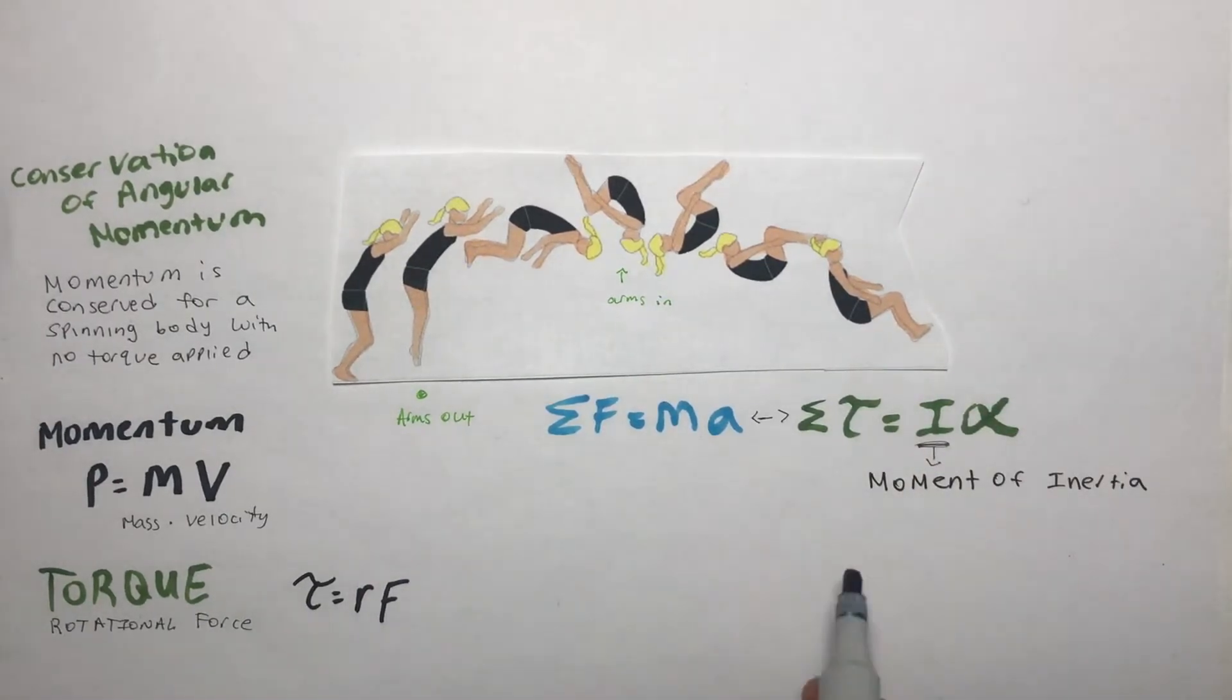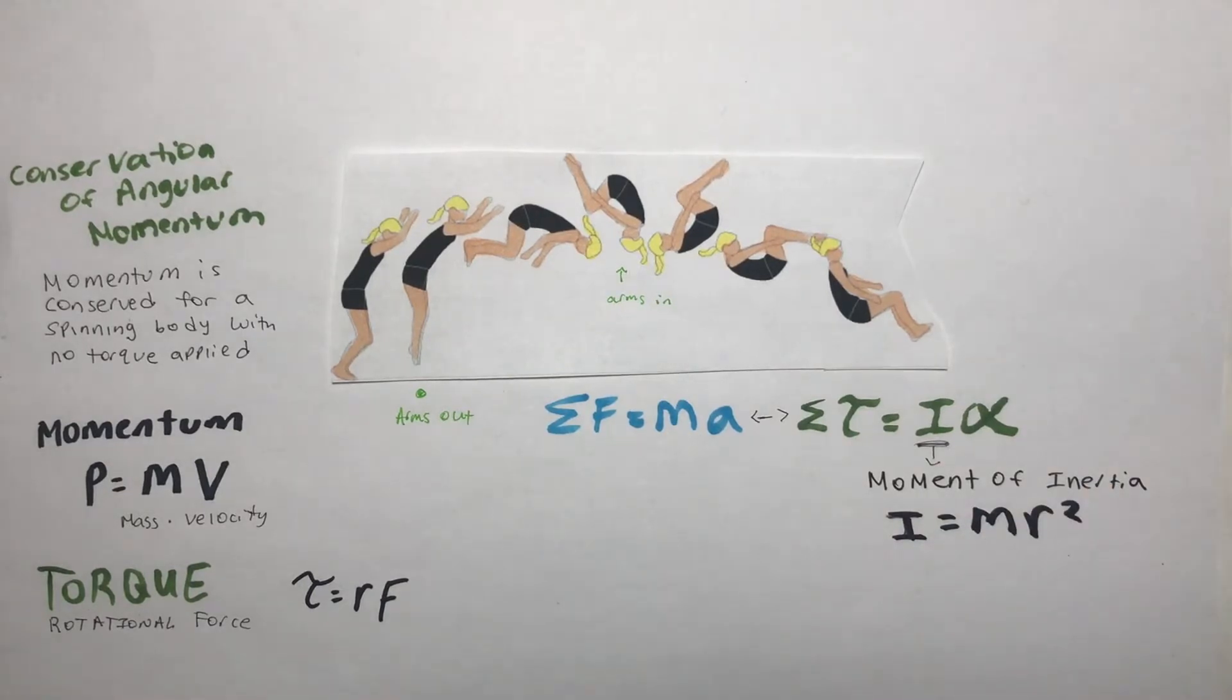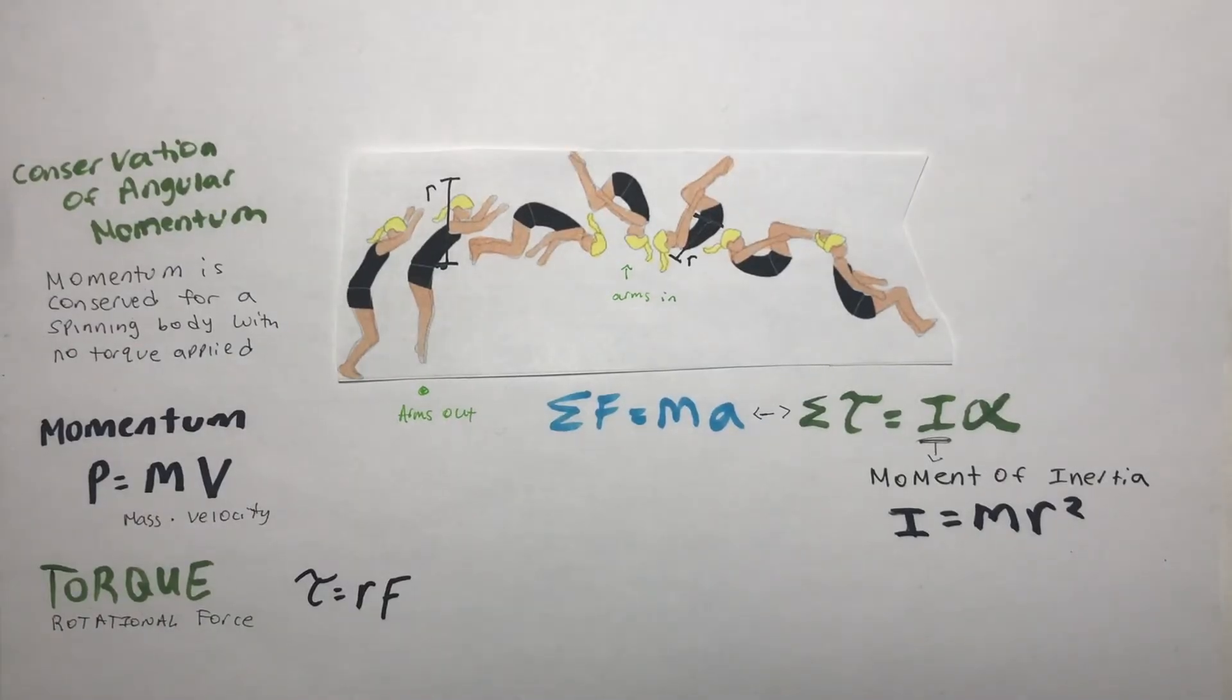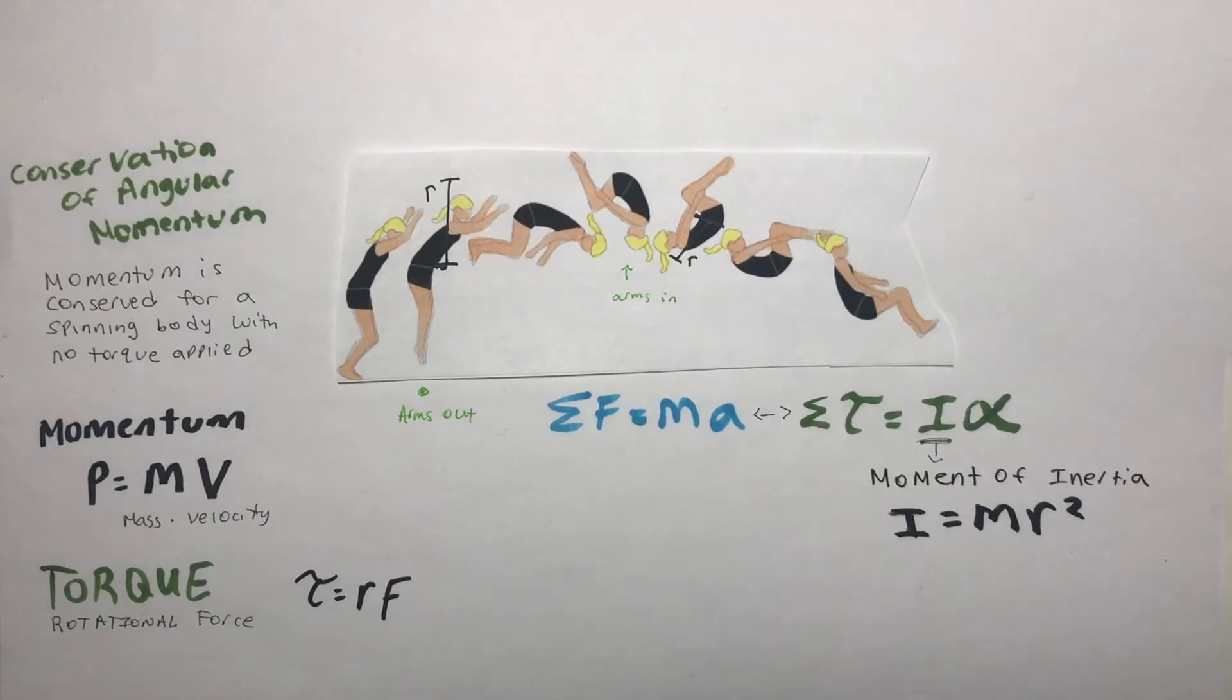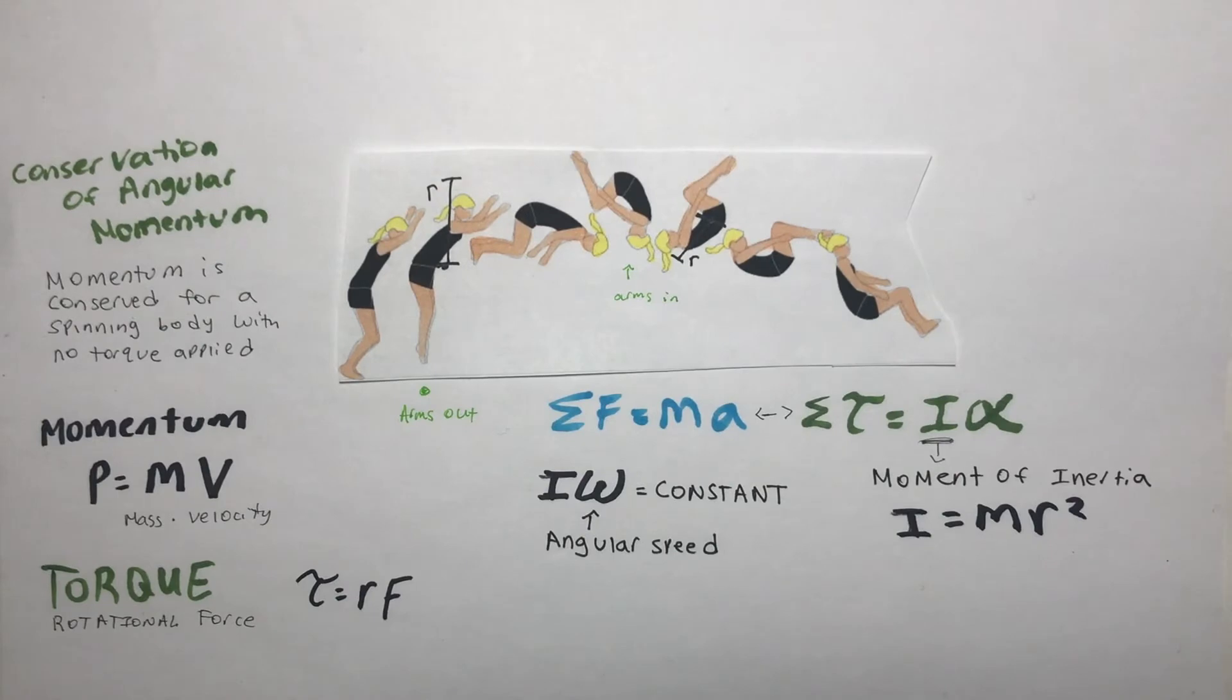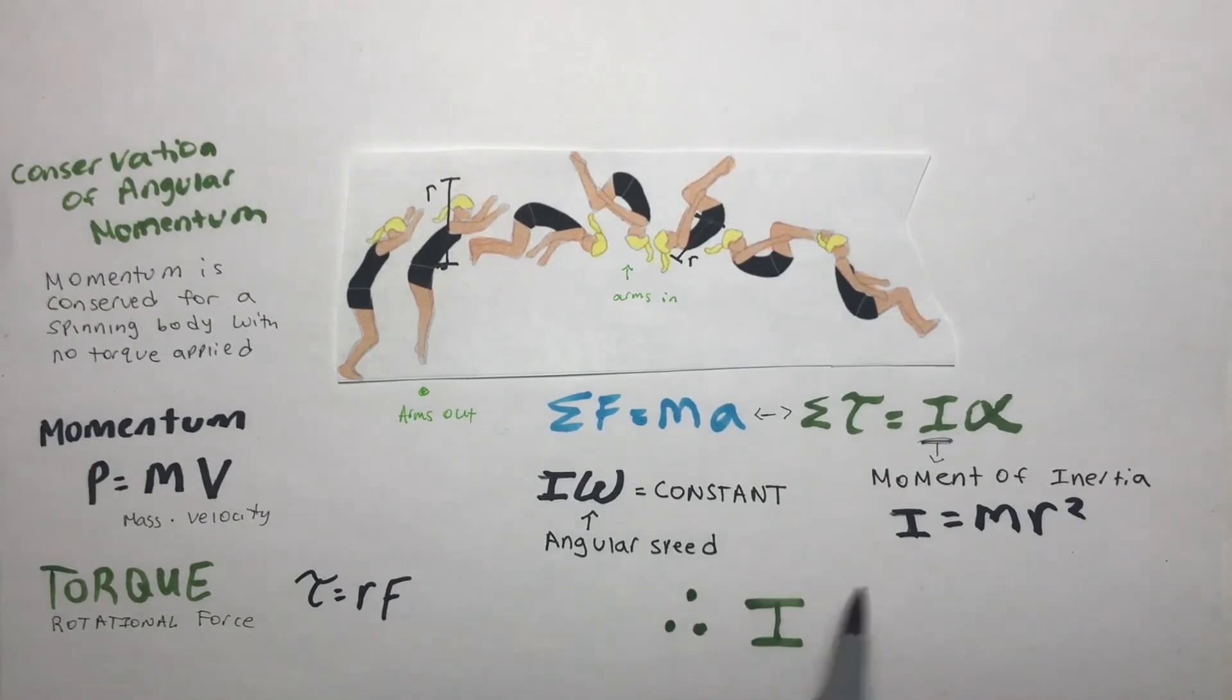The moment of inertia is basically how difficult it is to spin about an axis. It's equal to mass times radius squared. Therefore, when her arms are above her head, her inertia is much larger than when they are hugging her knees. Since angular momentum is conserved and her inertia decreases, her angular acceleration therefore must increase.